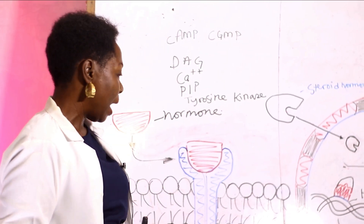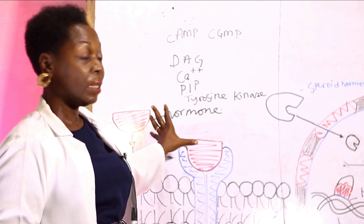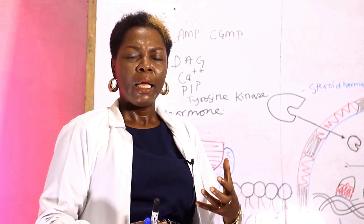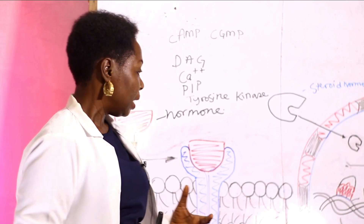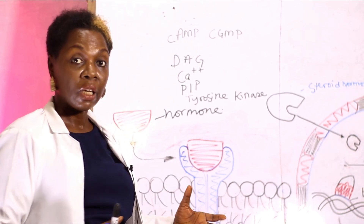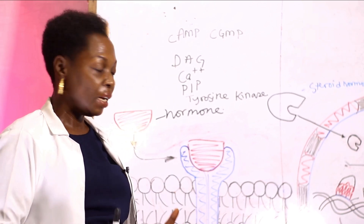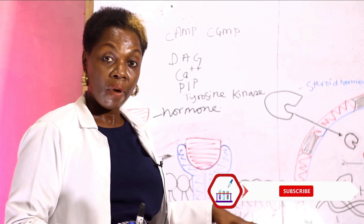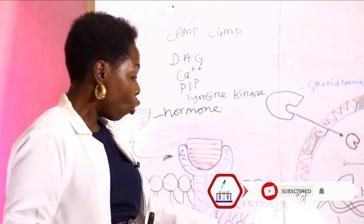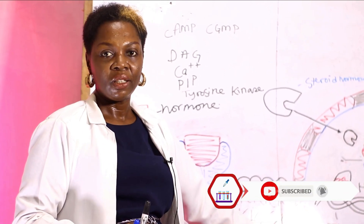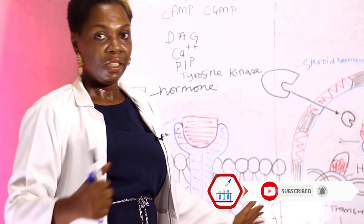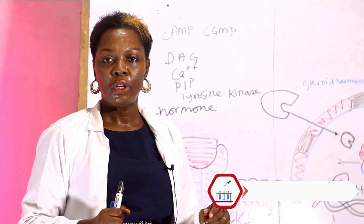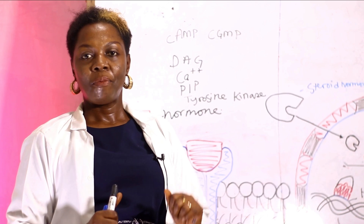Notice that hormones acting via the secondary messenger system have their action in prompt — in other words, they act promptly and are easily degraded. Their effect is diminished when the secondary messenger systems are deactivated. Drop your comments in the comment section below and subscribe. Thank you.